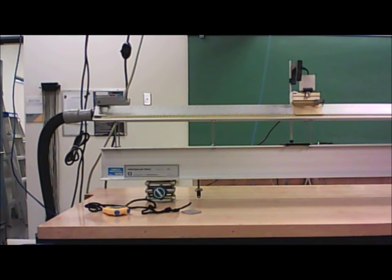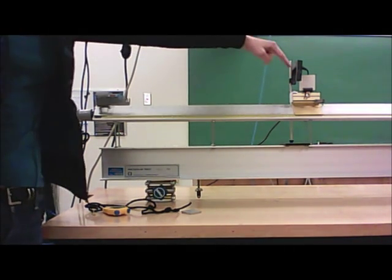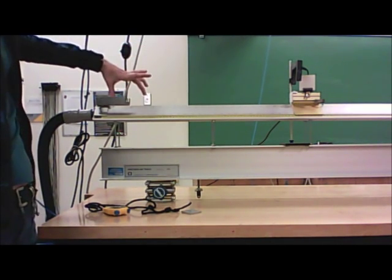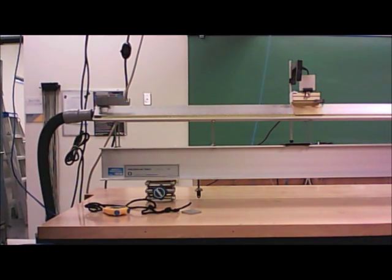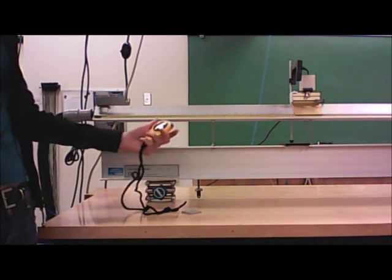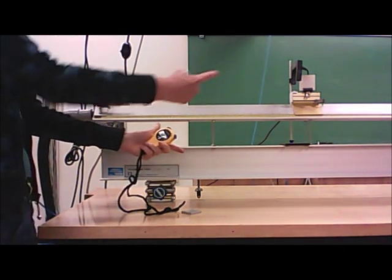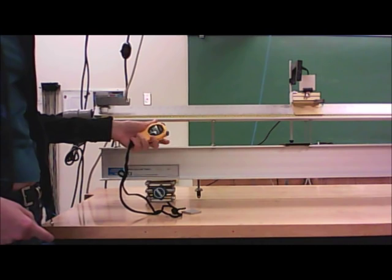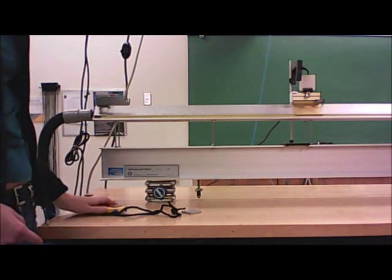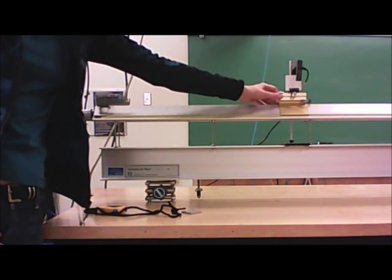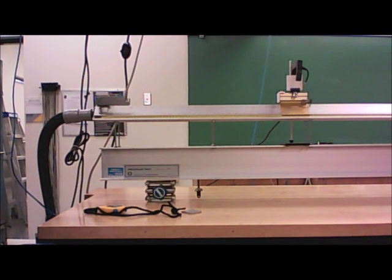There are three quantities that you're going to be measuring. One is D, which is the distance that the glider travels from its initial position to when it's centered in the photogate. The second thing is the time it takes the glider to go that far, and you'll measure that by hand using a stopwatch. The third thing you need is the final velocity of the glider when it passes through the photogate. That's a calculated value. I'm going to show you how to get that later.